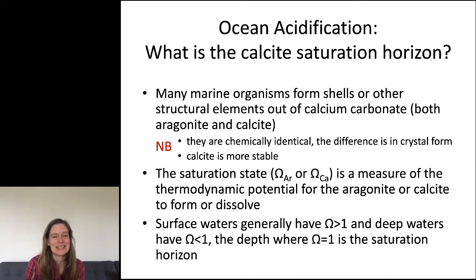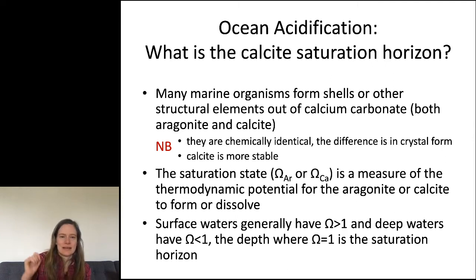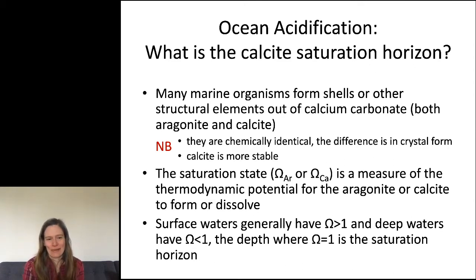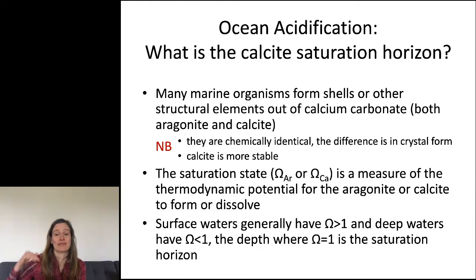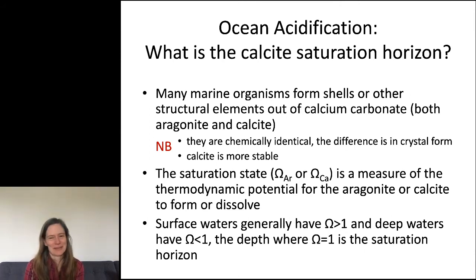Now shifting gears to ocean acidification — I'm going to talk mostly about the calcite saturation horizon. That might surprise some people because a lot of work uses the aragonite saturation horizon. Both are forms of calcium carbonate — chemically identical but different in crystal form; calcite is more stable. The aragonite saturation horizon is already very shallow, so it's really the calcite saturation horizon that intersects our seamounts. Even though the organisms have both aragonite and calcite, it's all mixed up in the biology.